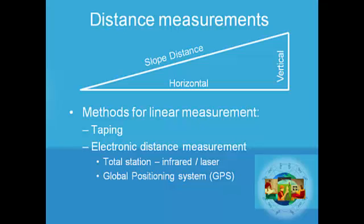With global positioning system, we're measuring distance electronically all the way from the satellites to our receivers, and we're doing it at the speed of light.